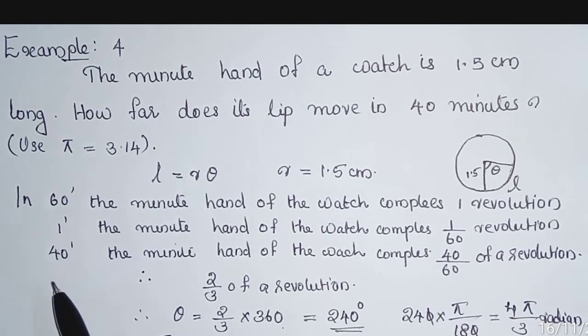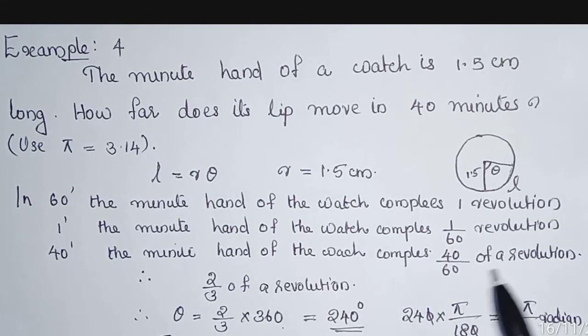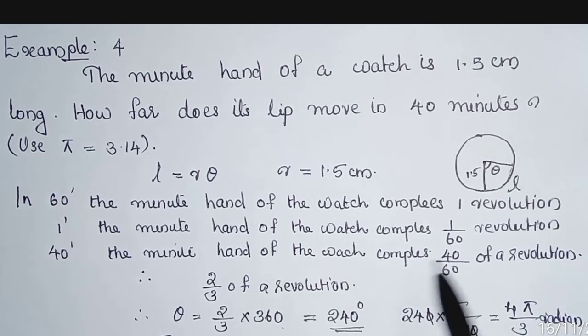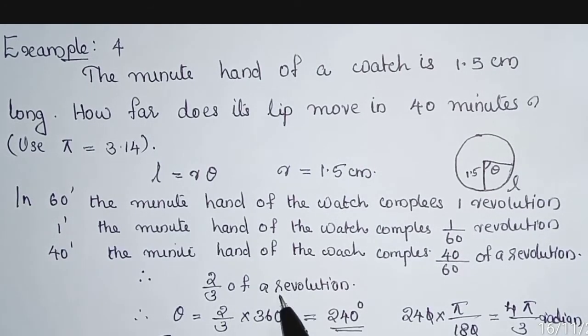Then, in 40 minutes, the minute hand of the watch completes 40/60 of a revolution. That is equal to 2/3. Dividing, we get 2/3 of a revolution.